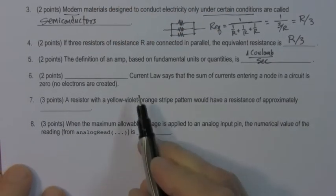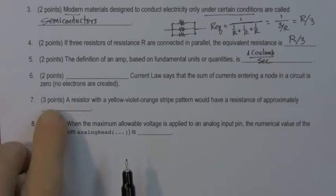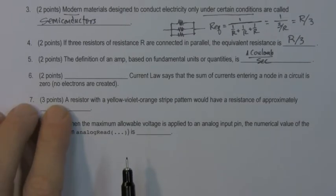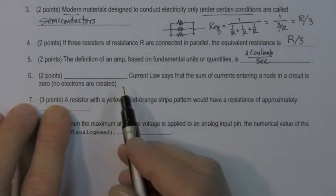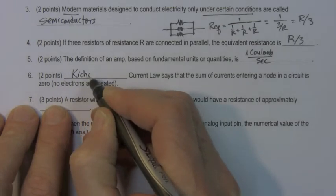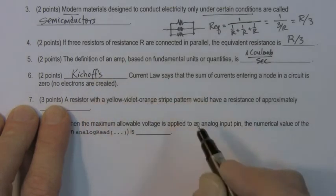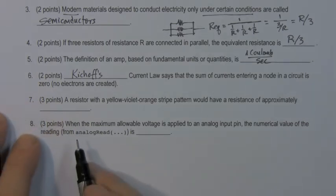Problem number six. Blank current law says that the sum of electric currents entering a node in a circuit is zero. No electrons are created. Blank current law. Sort of a giveaway. Kirchhoff's current law says that the sum of the currents entering the node is zero.